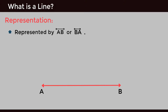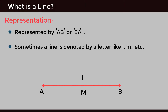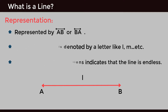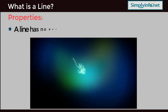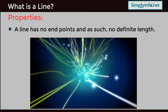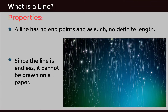Representation: A line is represented by AB bar or BA bar. Sometimes a line is denoted by a letter like l, m, etc. Arrows in opposite directions indicate that the line is endless. Properties: A line has no endpoints and as such no definite length. Since the line is endless, it cannot be drawn on paper.